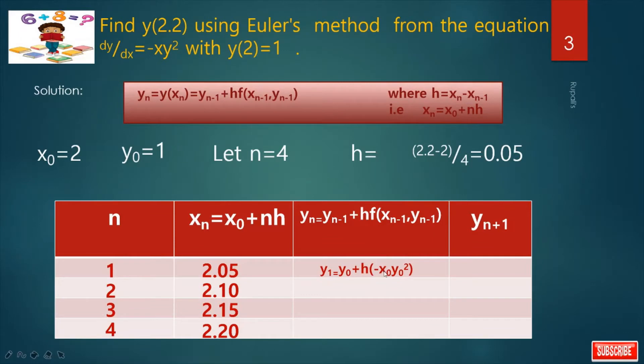y0 is 1, x0 is 2, y0 is 1 and h is 0.05. After calculation I get the value. Next time.